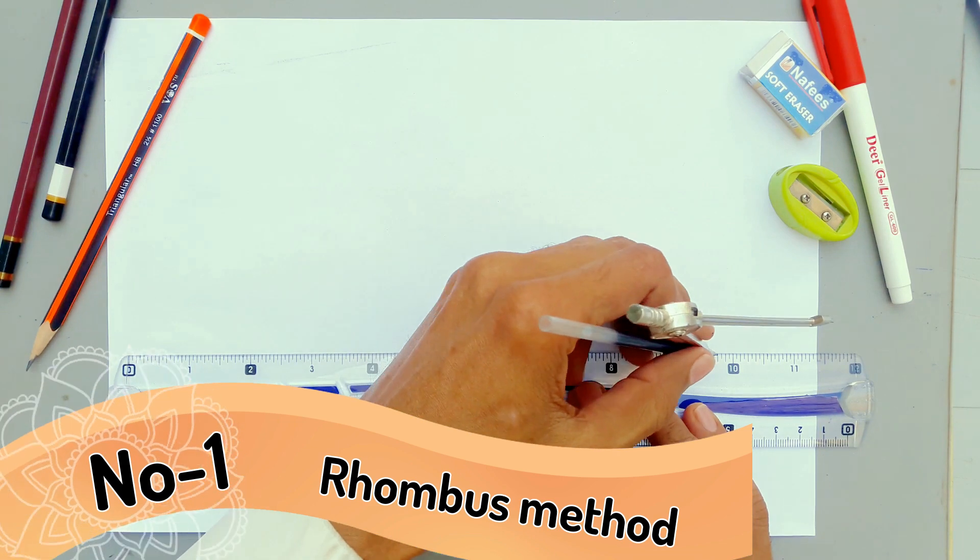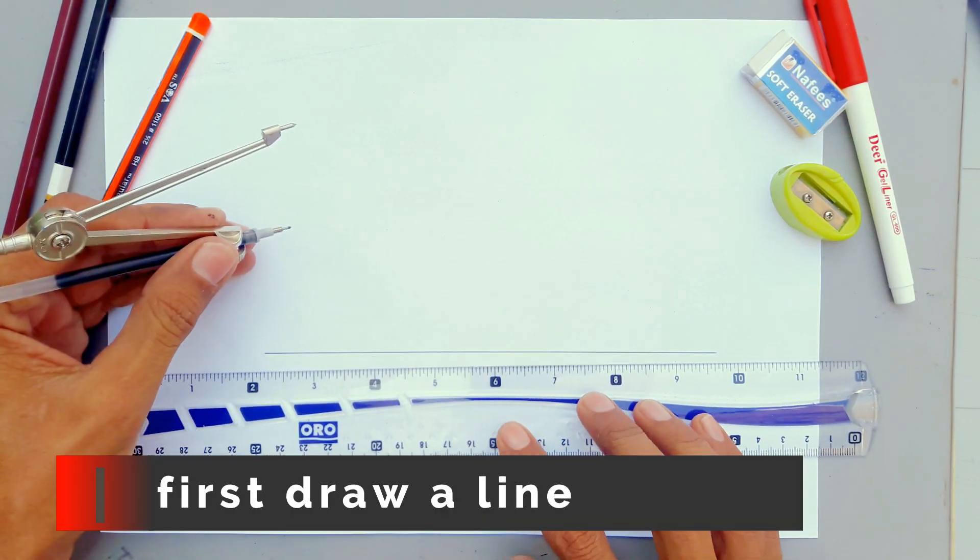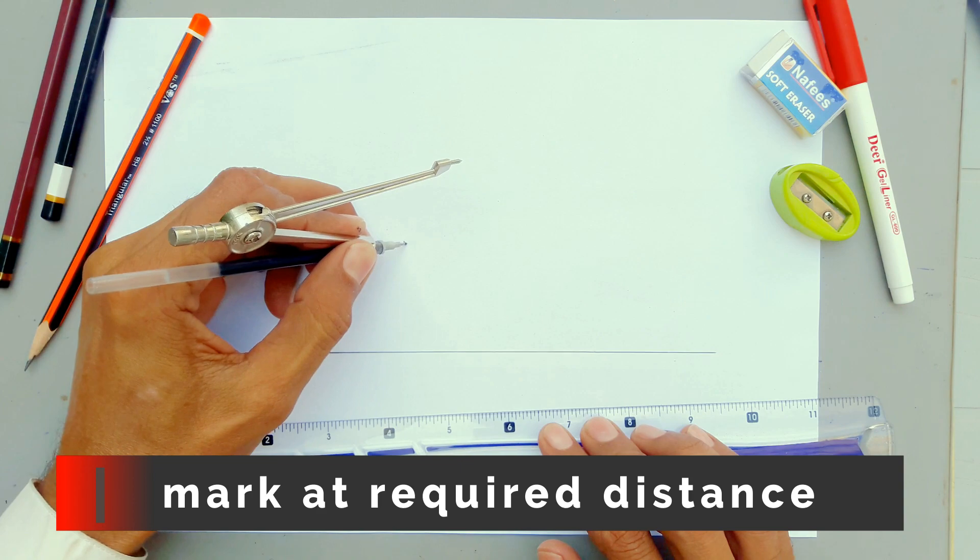Number 1, Rhombus Method. First draw a line. Mark at required distance.